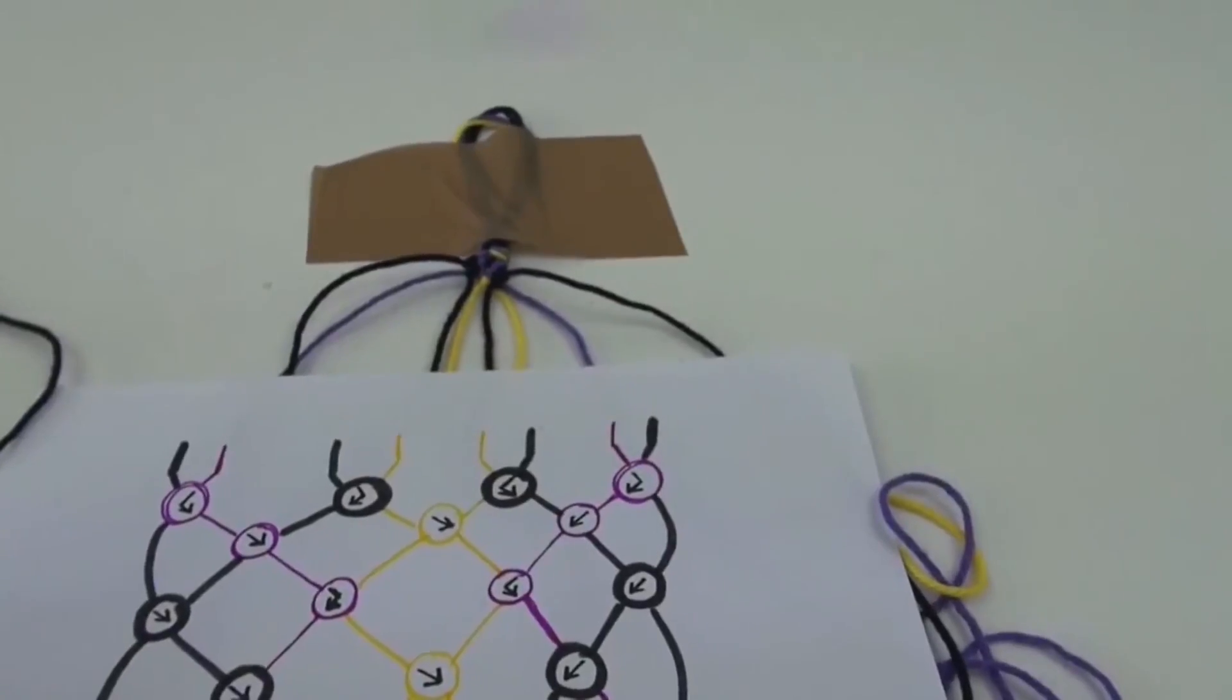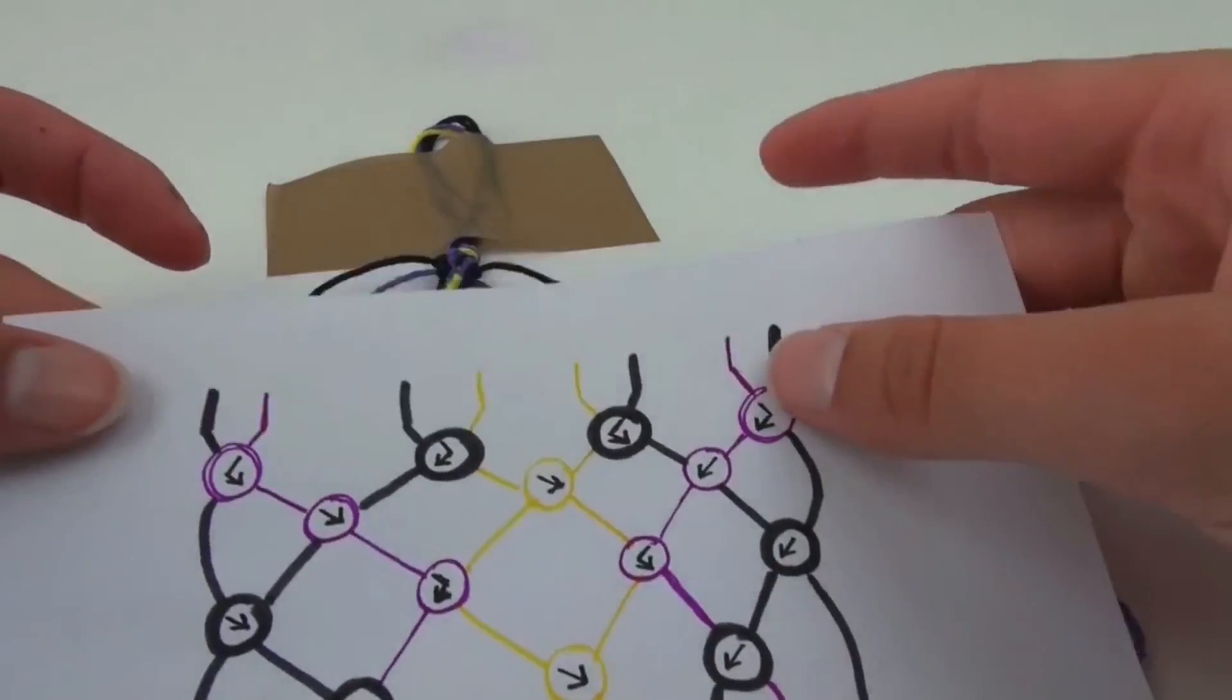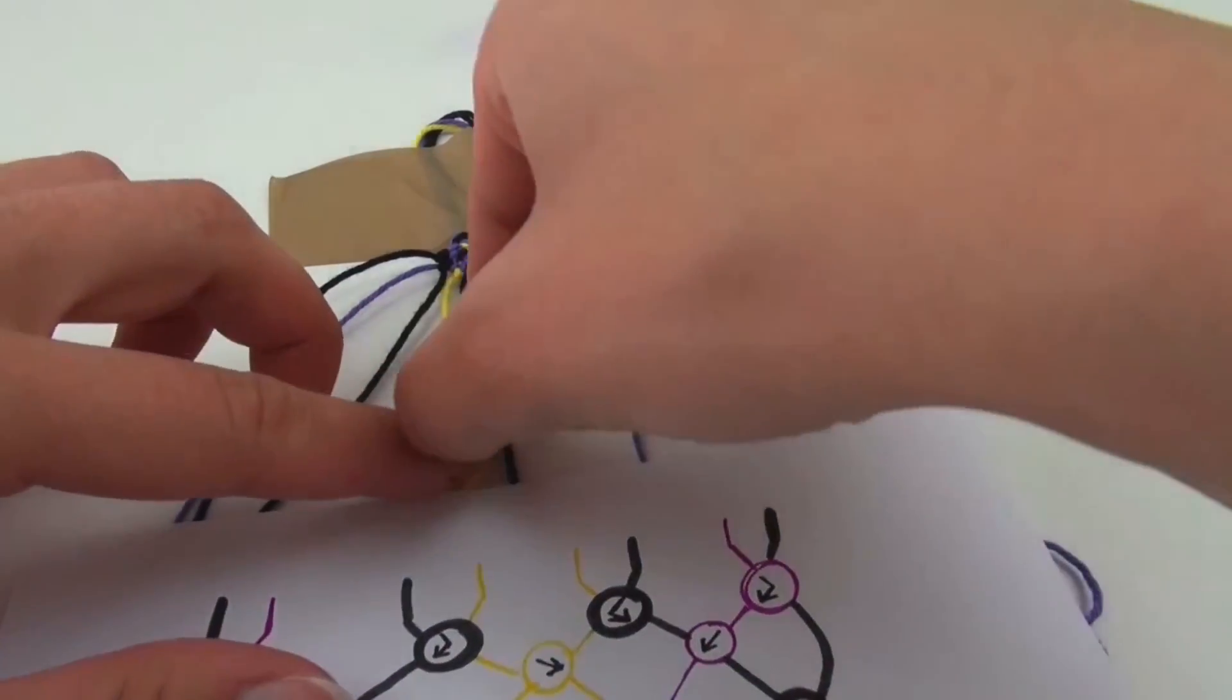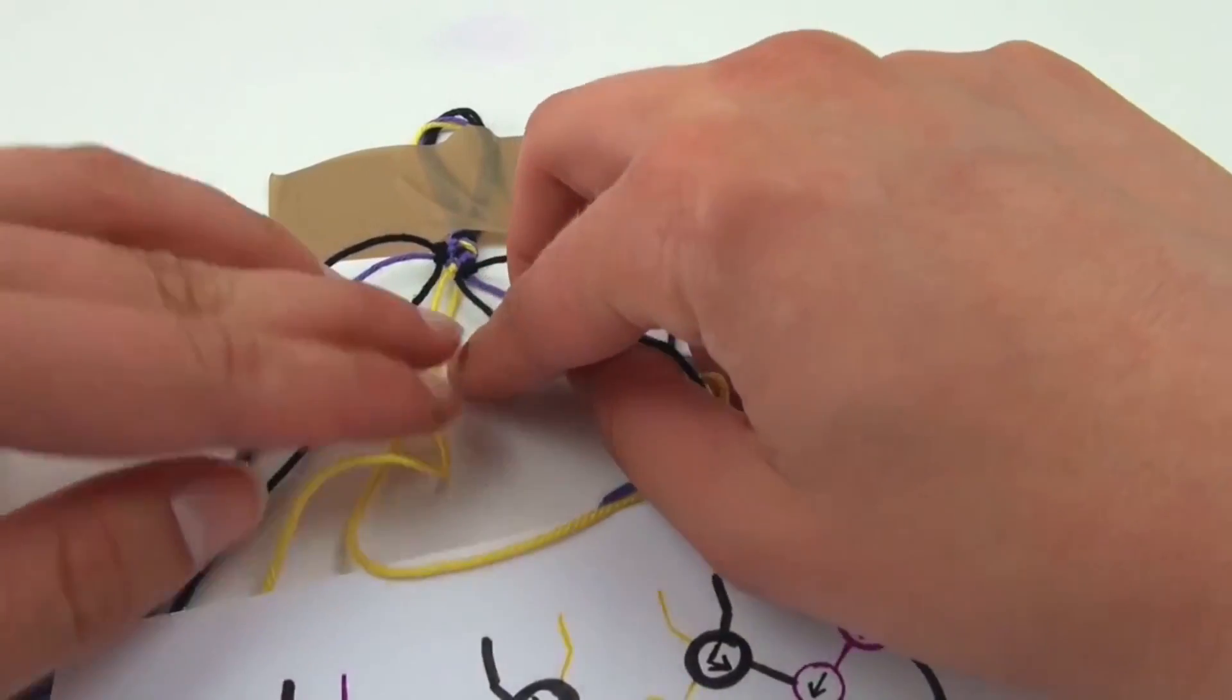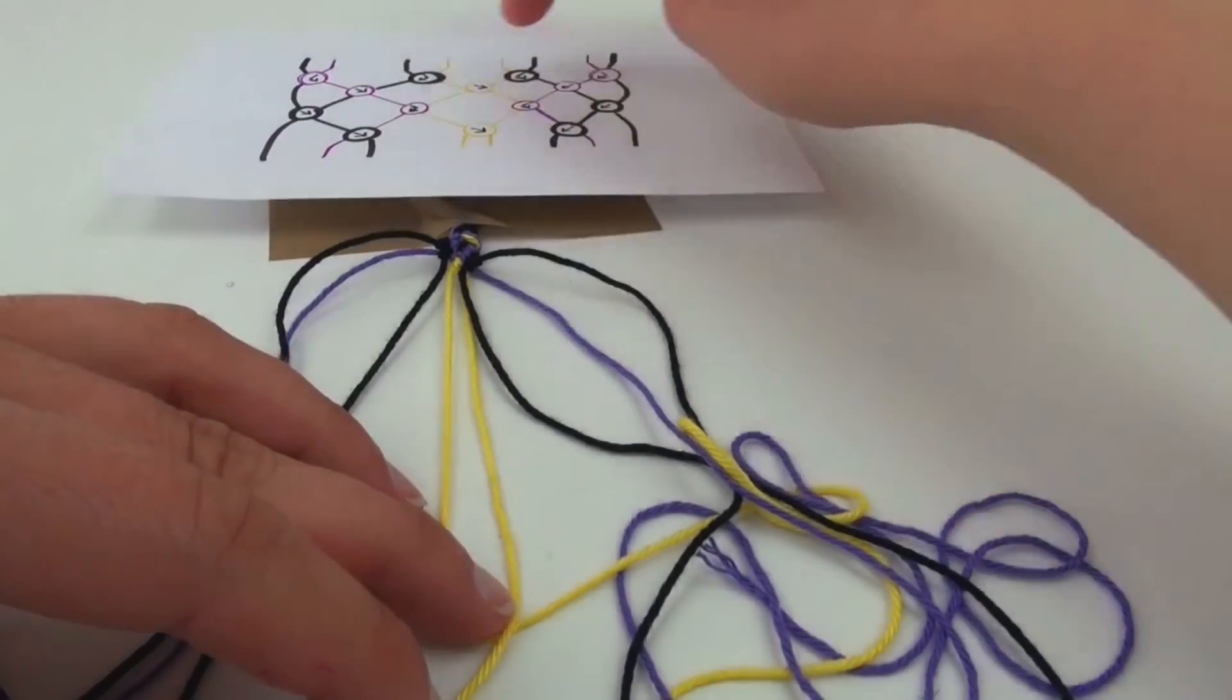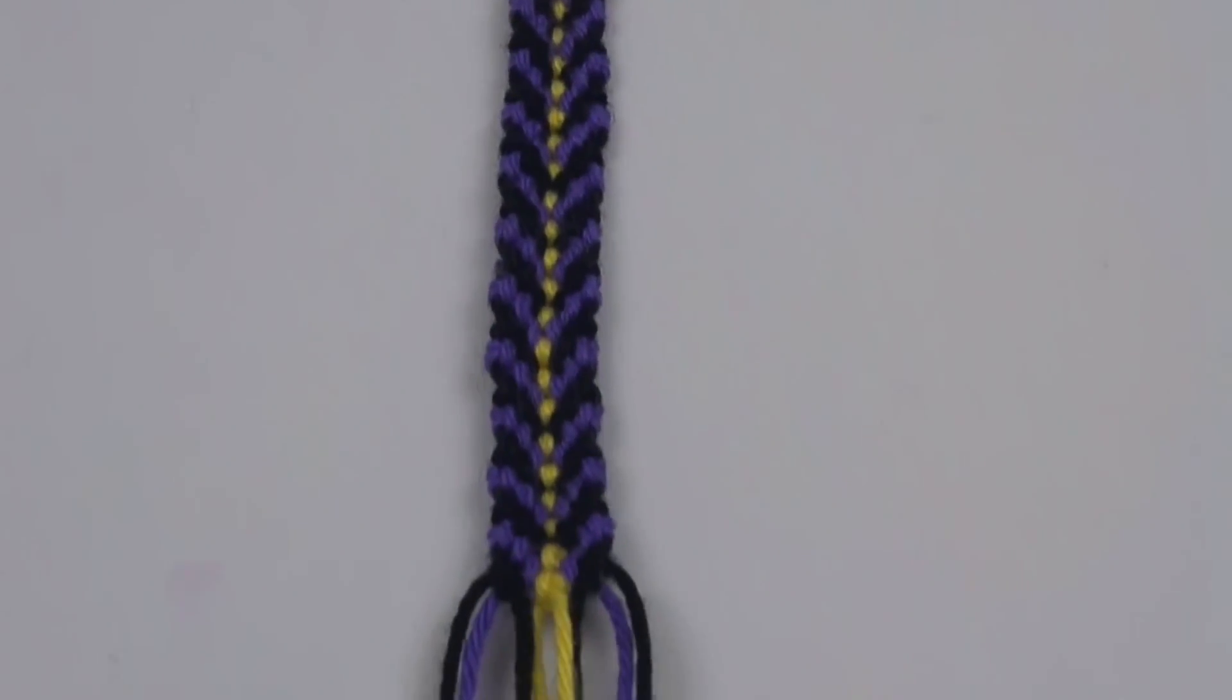The yellow keeps going back in the middle. All right, I'm going to continue. I've got the exact same colors as when I started with, so it's the same pattern continuously.